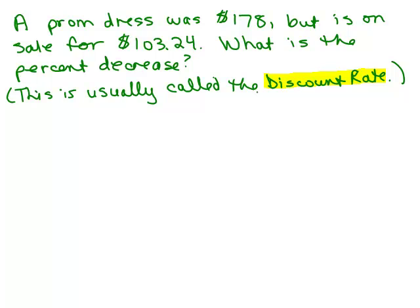Next problem. A prom dress was $178, but is on sale for $103.24. What is the percent decrease? Really, that is called the discount rate. Somebody would say, what's the discount rate? In other words, what percent off did they have at the store to only sell for $103.24? Why don't you try this on your own first?